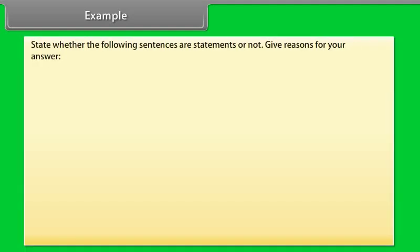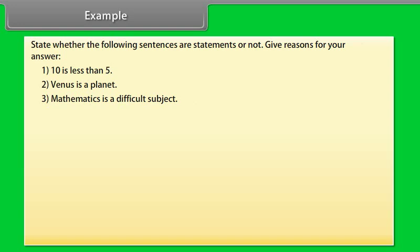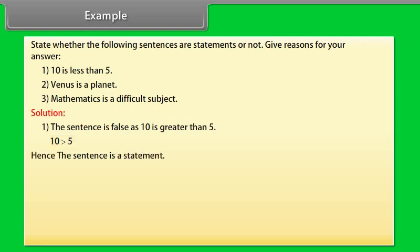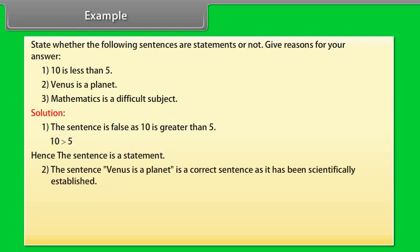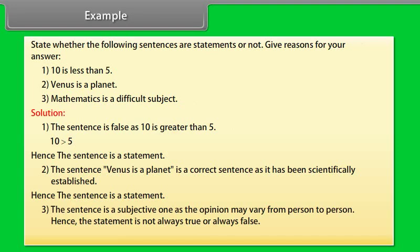Example: State whether the following sentences are statements or not, and give reasons. (1) 10 is less than 5 — this sentence is false as 10 is greater than 5; hence it is a statement. (2) Venus is a planet — this is correct as it has been scientifically established; hence it is a statement. (3) Mathematics is a difficult subject — this is subjective as the opinion may vary from person to person; hence the sentence is not a statement.